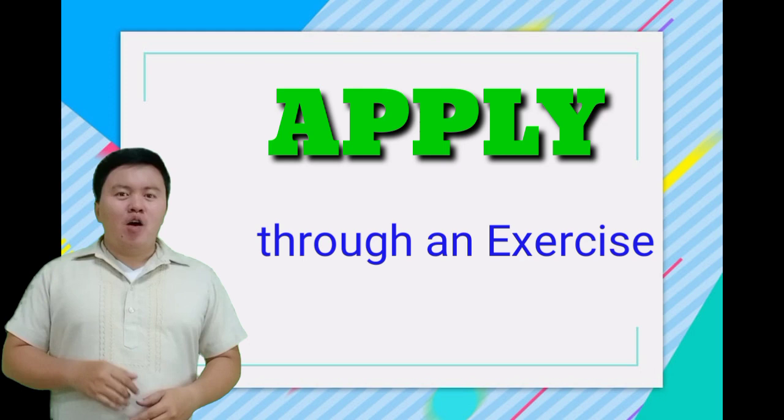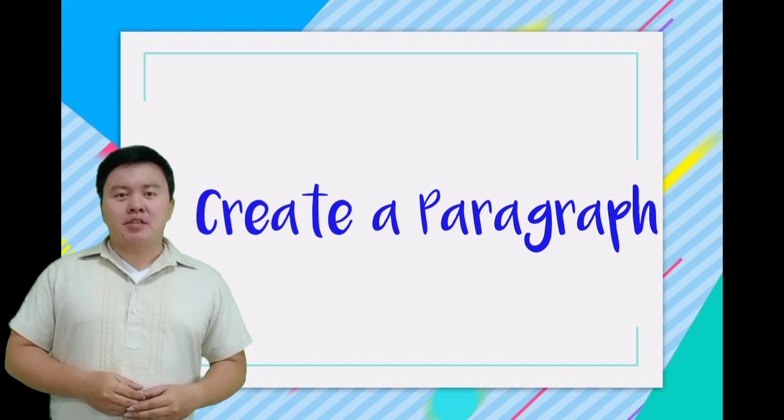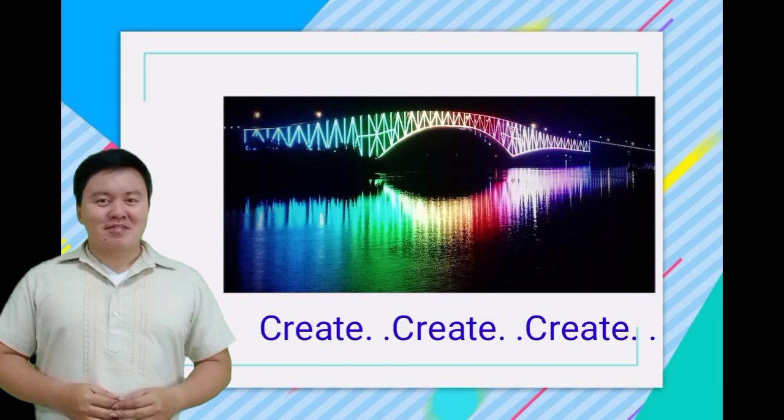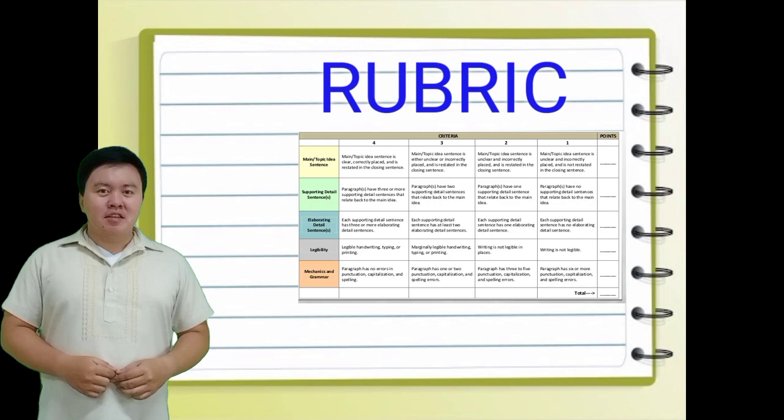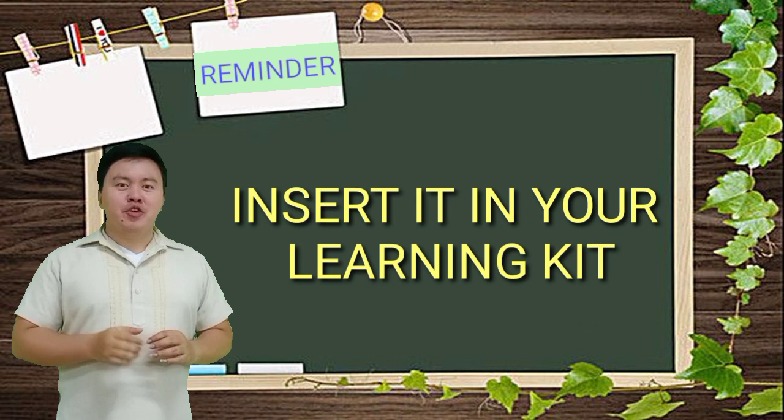What I need you to do is to develop a paragraph by observing its three different parts using this picture. To guide you in doing this activity, here is the rubric for rating. Please observe and follow the guidelines. Don't forget to submit your work on time and insert it in your learning kit, and I'll be checking it once I receive it.